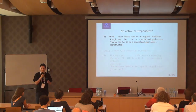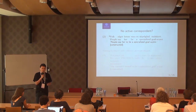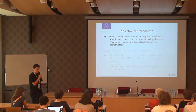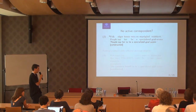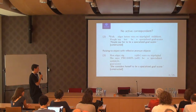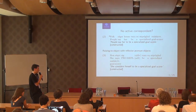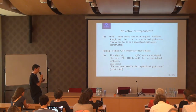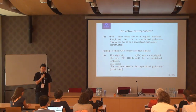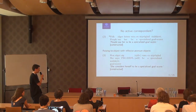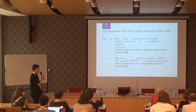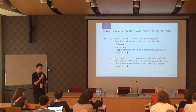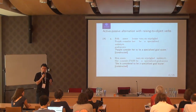While in English raising-to-object with the predicate 'say' is never possible, in Swedish raising-to-object is possible when you have a reflexive pronoun object. So 'hon säger sig vara en utpräglad målskytt,' which means something like 'she considers herself to be a specialized goalscorer.' In this case, the raising-to-object construction is possible. For other predicates such as 'anse' (consider), raising-to-object is possible and it is not restricted to reflexive pronoun objects.